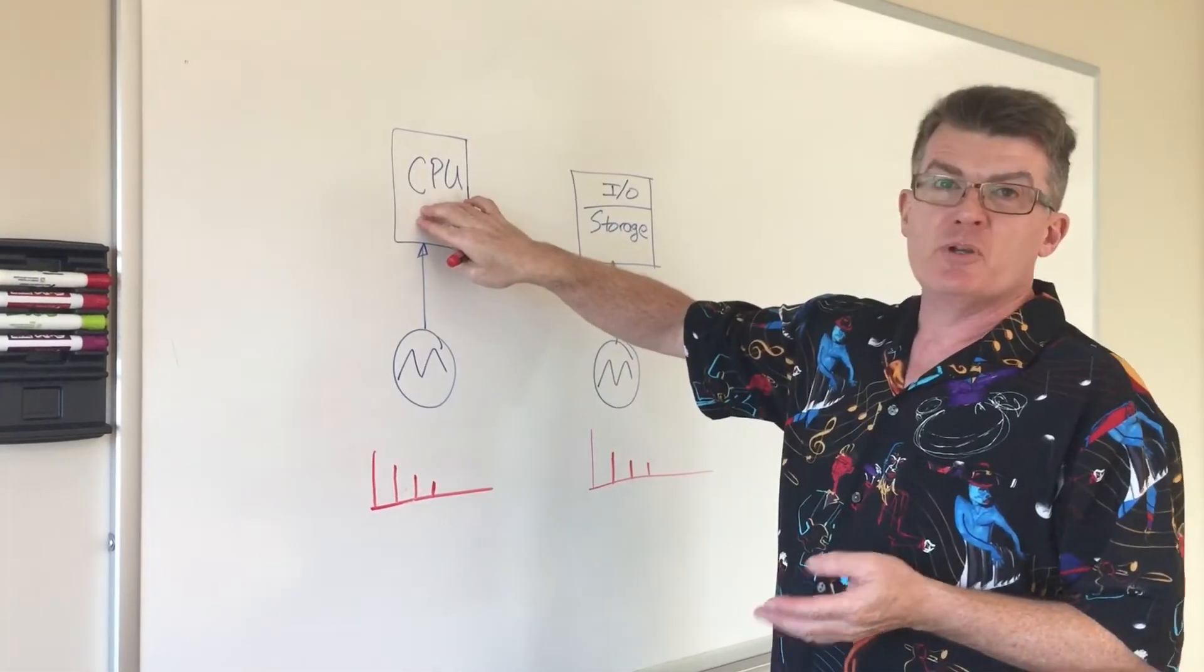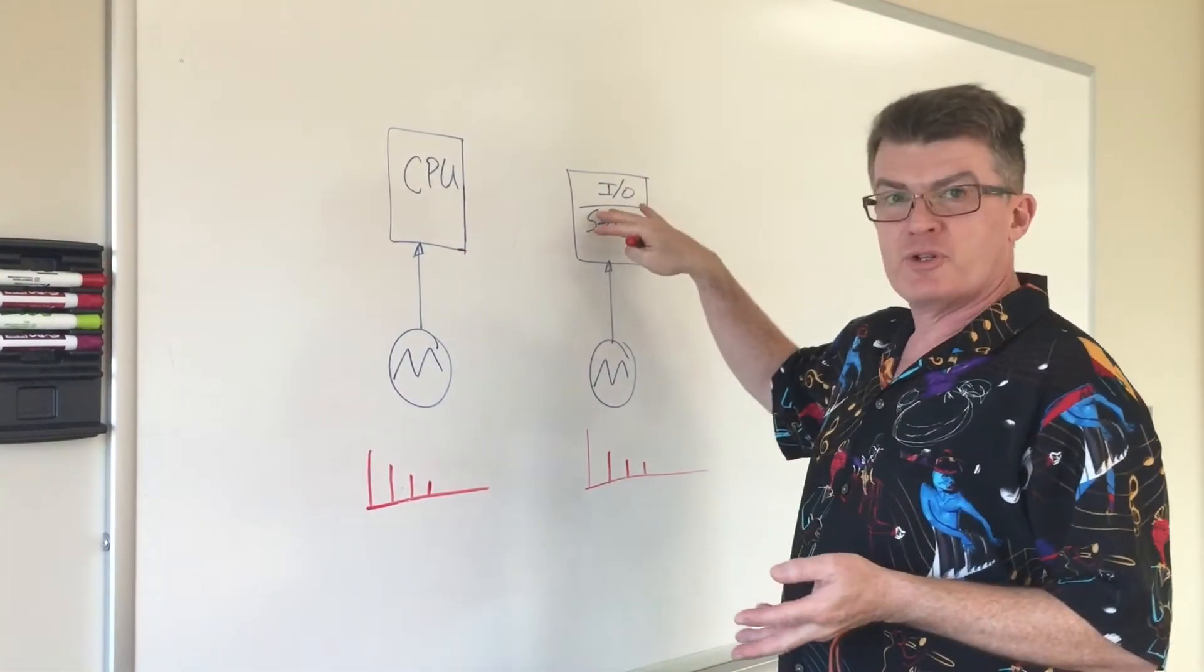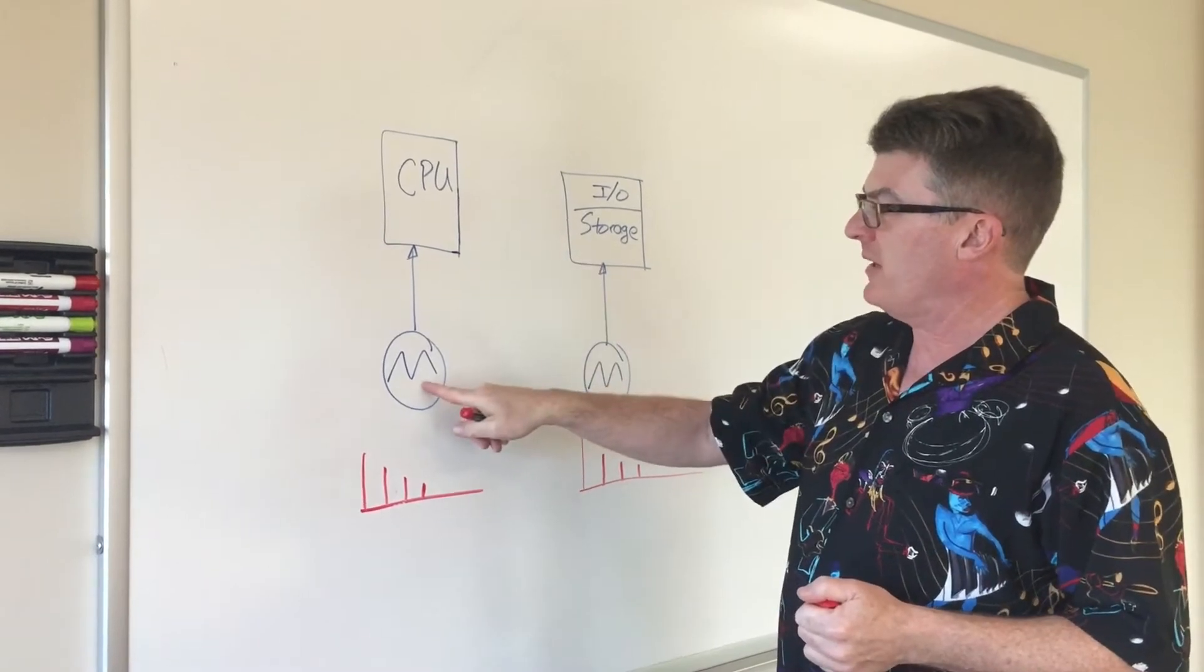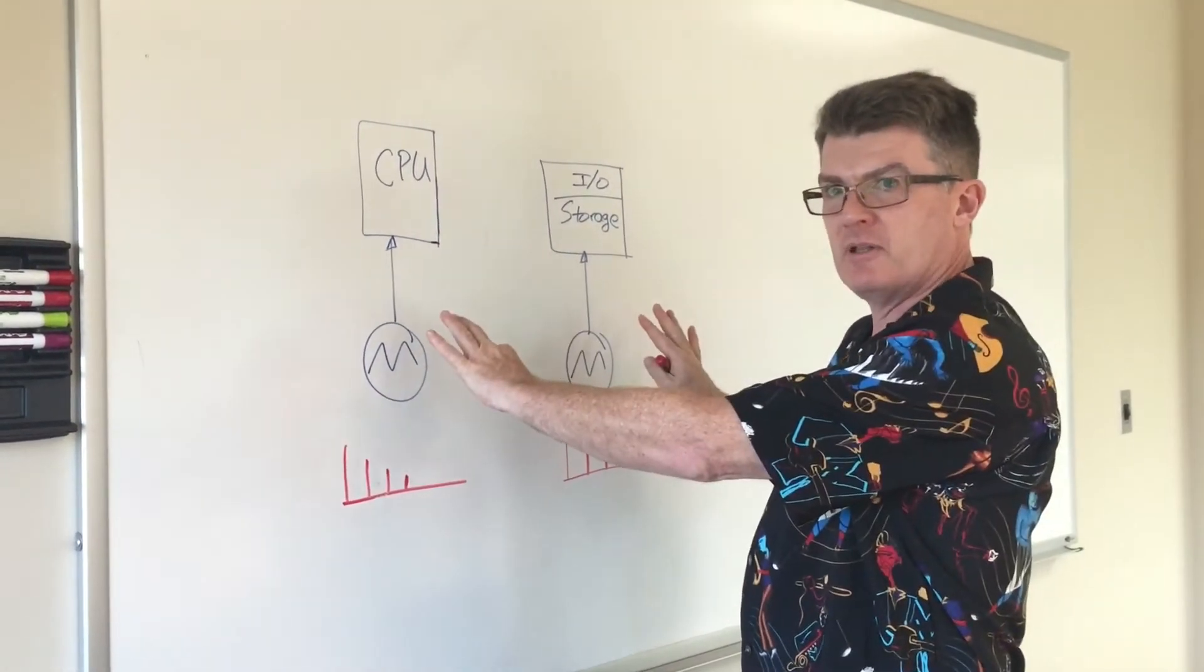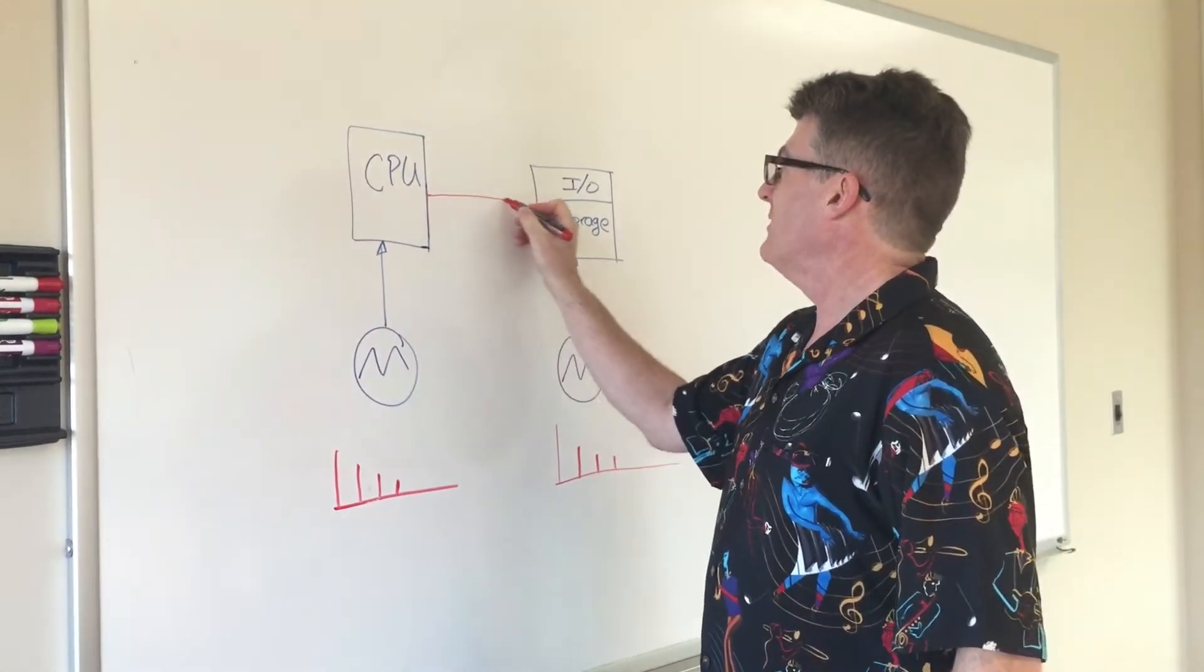So we have a CPU block here and we have our IO storage block here, and in this case they're both being clocked by a spreading clock source, two separate spreading clock sources, and we have the PCI link between them.